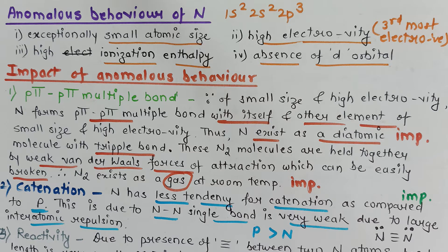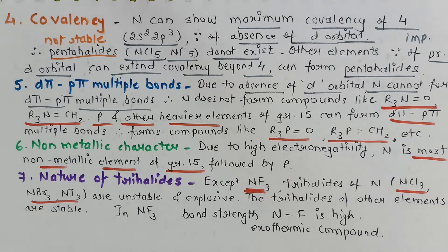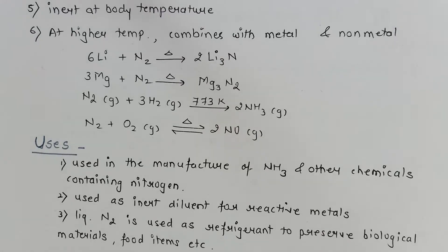The impact of anomalous behavior includes formation of p𝜋–p𝜋 multiple bonds, catenation, reactivity, inert nature, formation of only four bonds (maximum covalency 4), and inability to form d𝜋–p𝜋 bonds. Its trihalides are unstable. At higher temperature, the reactivity of nitrogen increases, meaning it no longer remains inert and will combine with metals and non-metals.